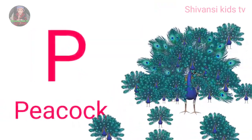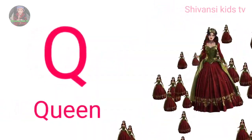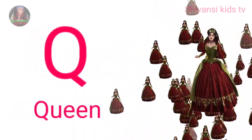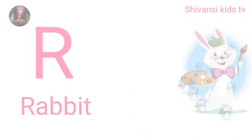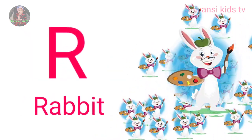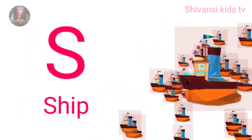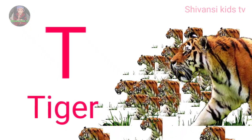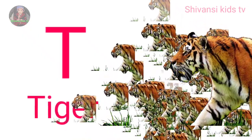P for peacock, Q for queen, R for rabbit, S for sheep, T for tiger.